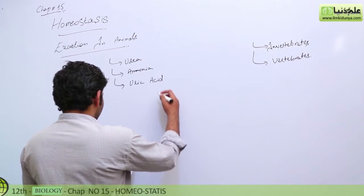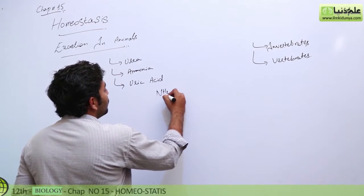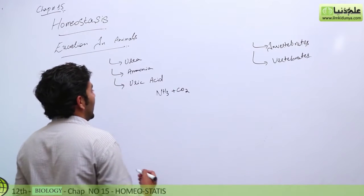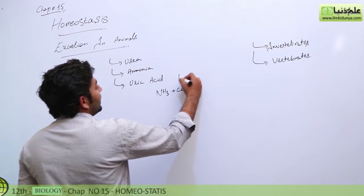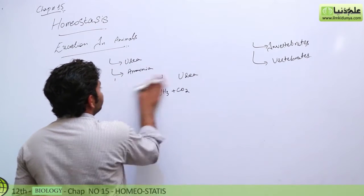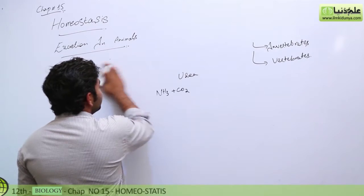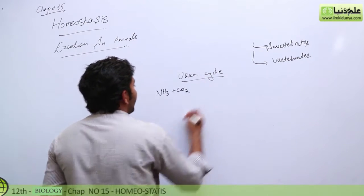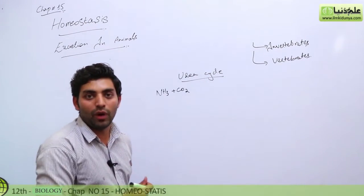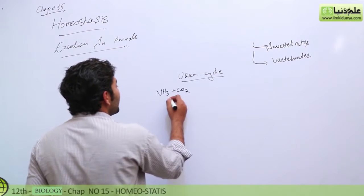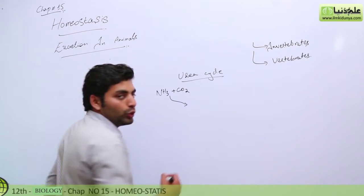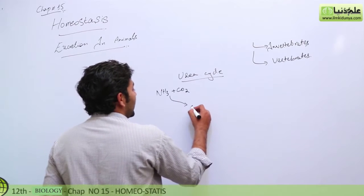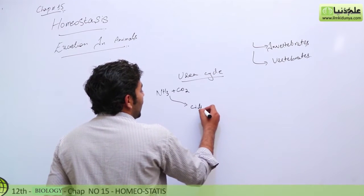In the urea cycle, ammonia along with carbon dioxide must be present. These two substances enter into the urea cycle, and the first complex that is formed within the urea cycle begins the conversion process.